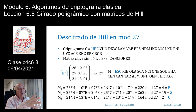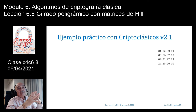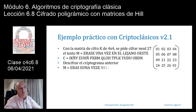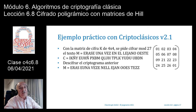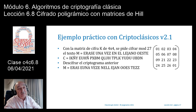A continuación presentamos dos ejercicios que resolveremos con el software CriptoClásicos. El primero usa una matriz de 4×4 con números: 1, 2, 3, 4, 5, 6, 7, 8, 9, 21, 22, 23, 24, 25, 26, 1. Esta matriz tiene inversa en módulo 27 y cifraremos el texto 'érase una vez en el lejano oeste'. El criptograma resultante empieza por C=I, K, Ñ, Y y termina con V, D, N. Al descifrar debe aparecer el texto original con dos rellenos ZZ.